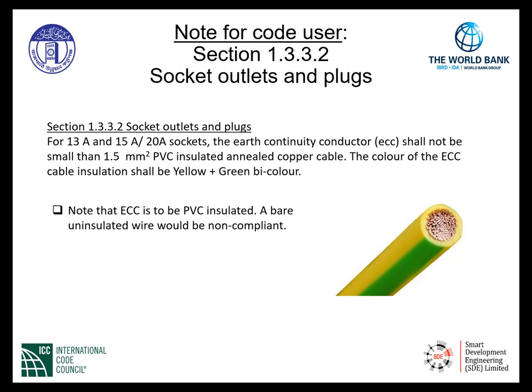ECCs of appropriate size must run from an MDB to its DBs, from a DB to its corresponding SDBs, from an SDB to the switchboards under that SDB, from an SDB to the BDBs if any, from a BDB to the switchboards under that BDB, and from an SDB or BDB to the sockets under them. A note for code users: in Section 1.3.3.2 titled Sockets, Outlets and Plugs, the earth continuity conductor shall not be smaller than 1.5 square millimeters, PVC insulated annealed copper. The color of the ECC insulation shall be yellow plus green bi-color. A bare uninsulated wire would not be compliant with this section.